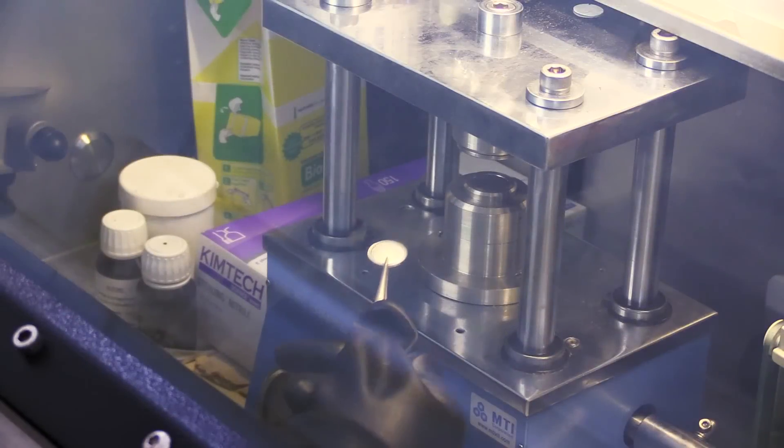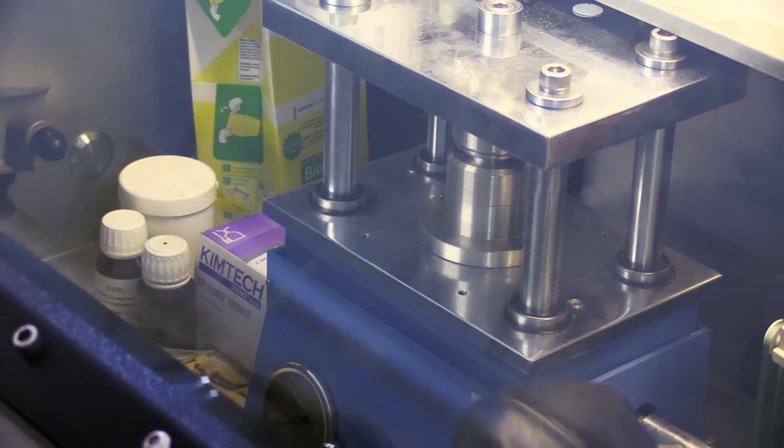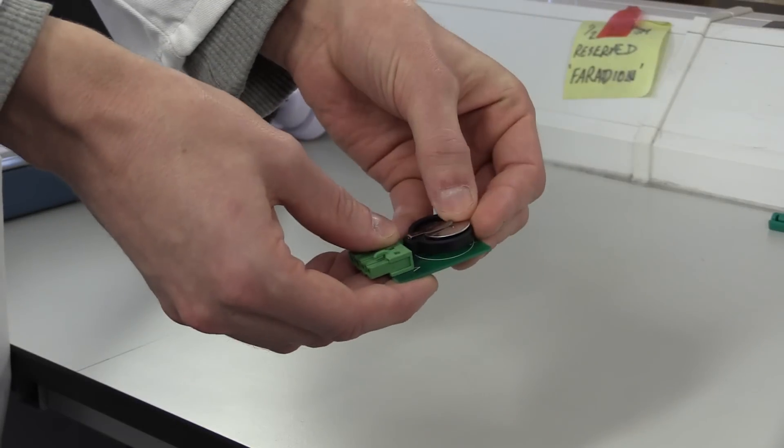This assembly is then crimped, bringing all the components into close contact and sealing the coin cell, protecting the contents from contamination. And there we have it, a finished supercapacitor coin cell. Once the supercapacitors have been manufactured in the glove box, they need to be tested in order to analyse their performance.